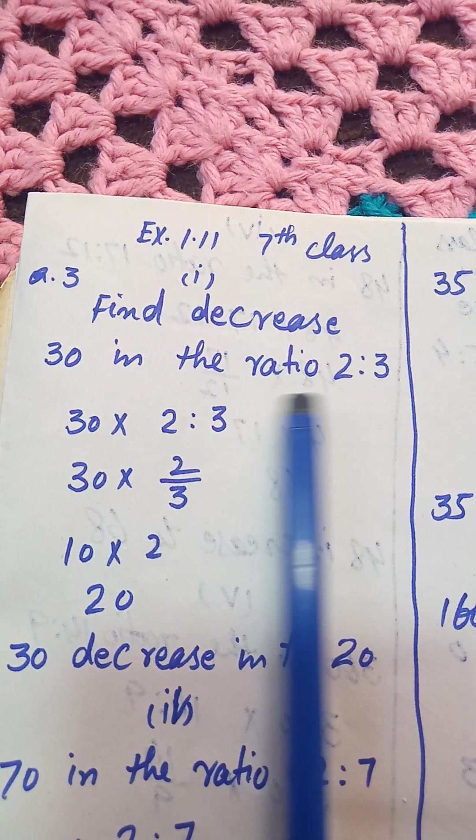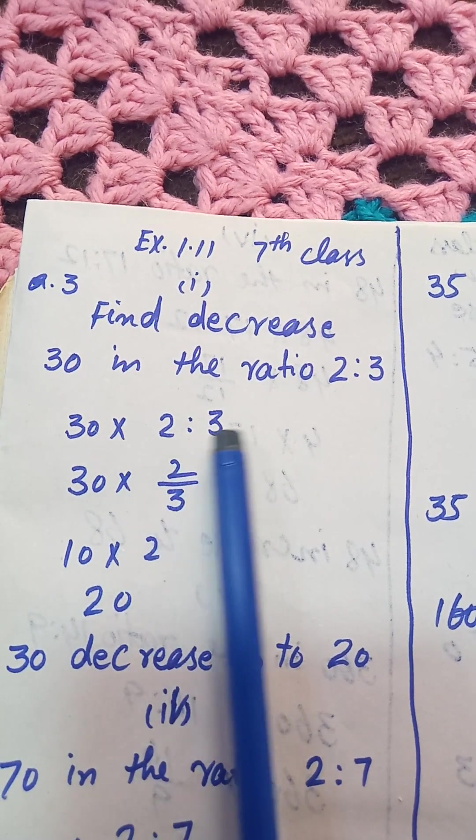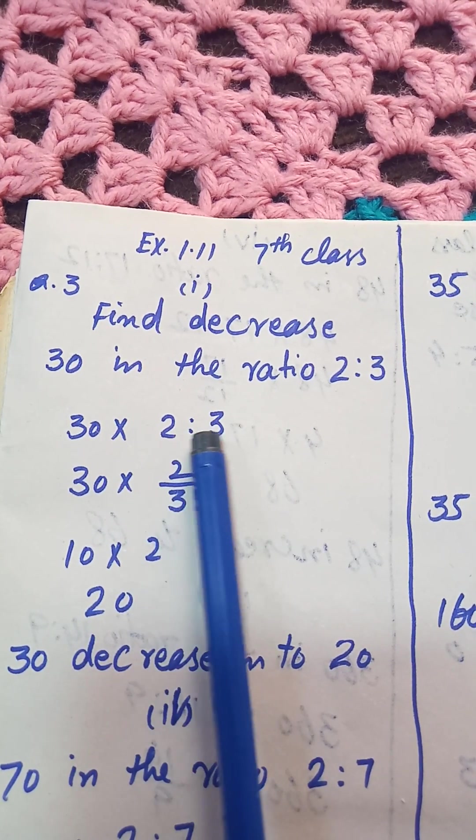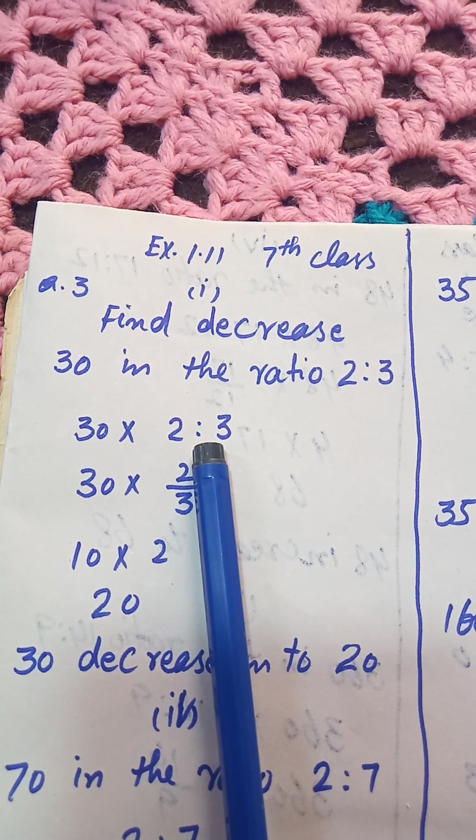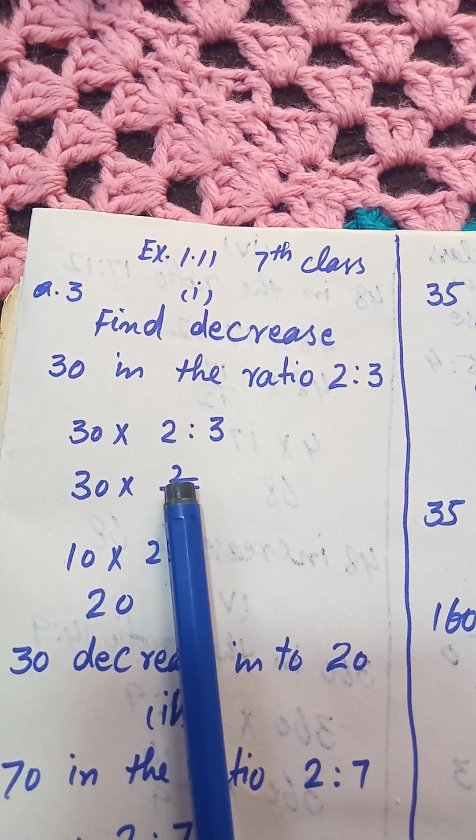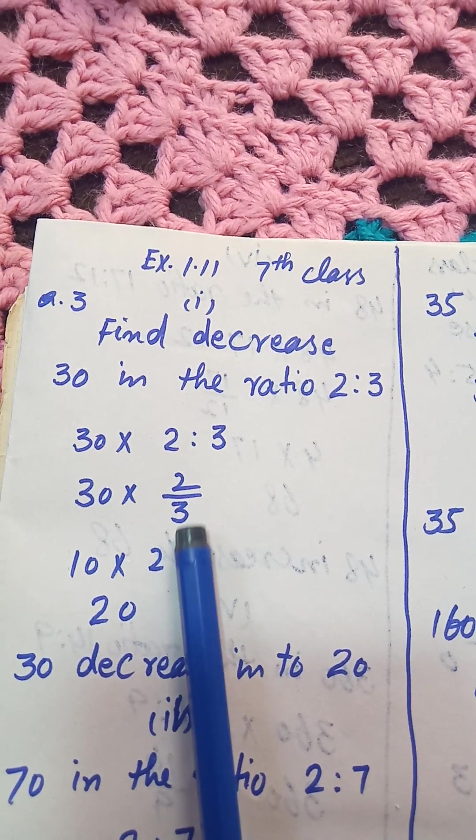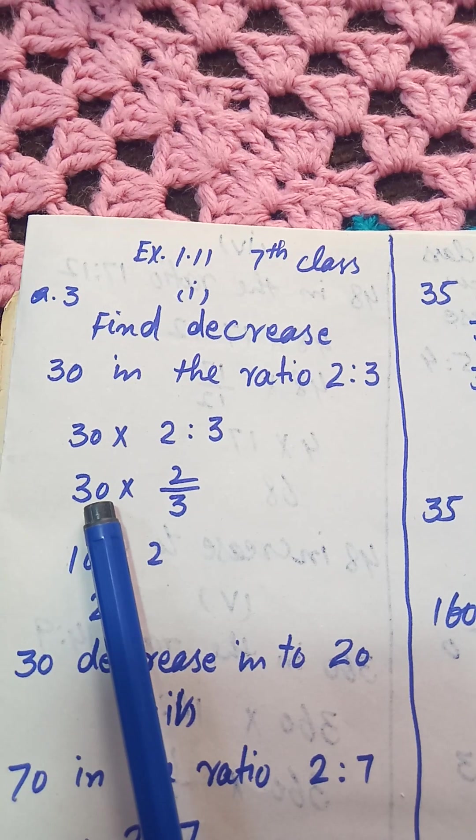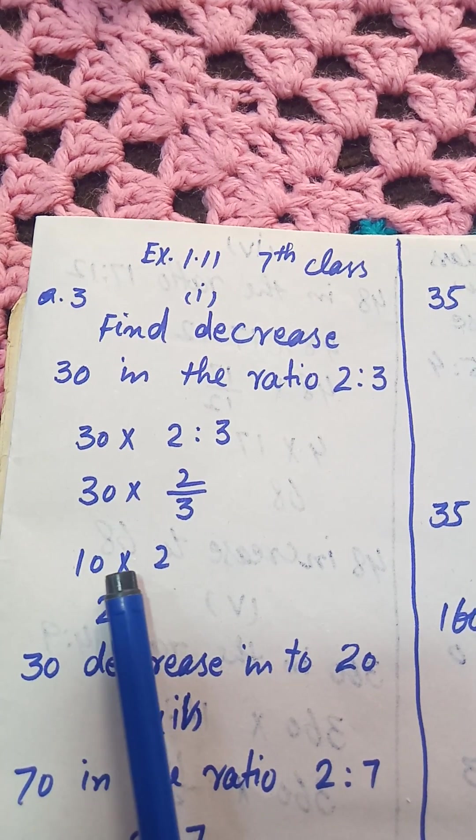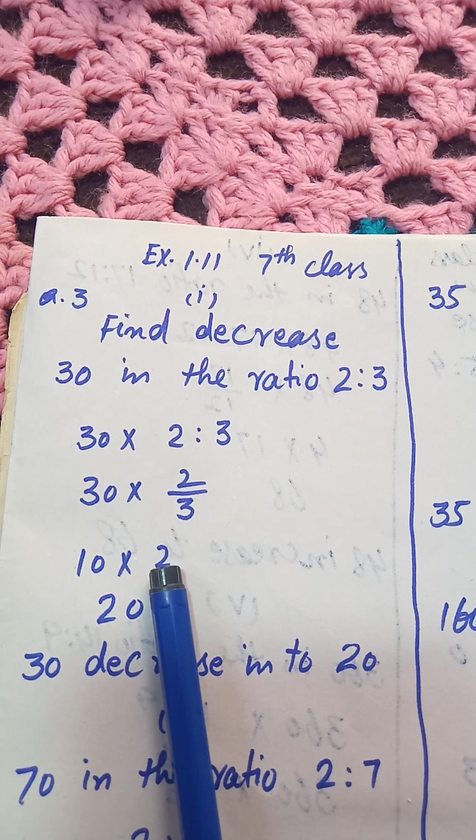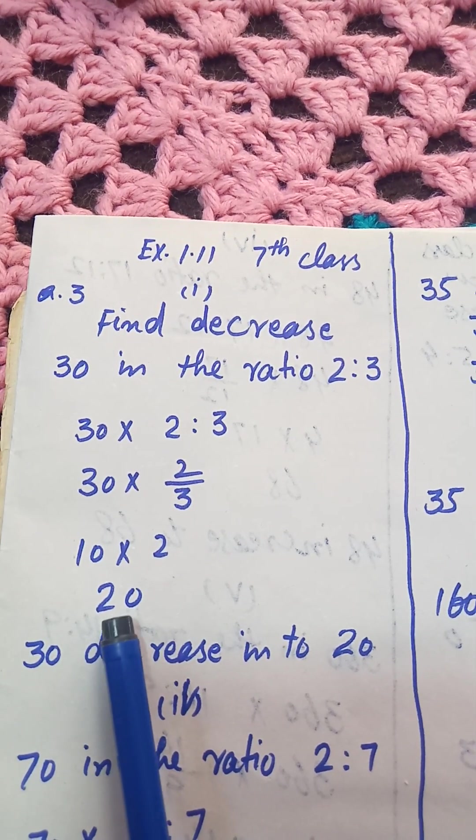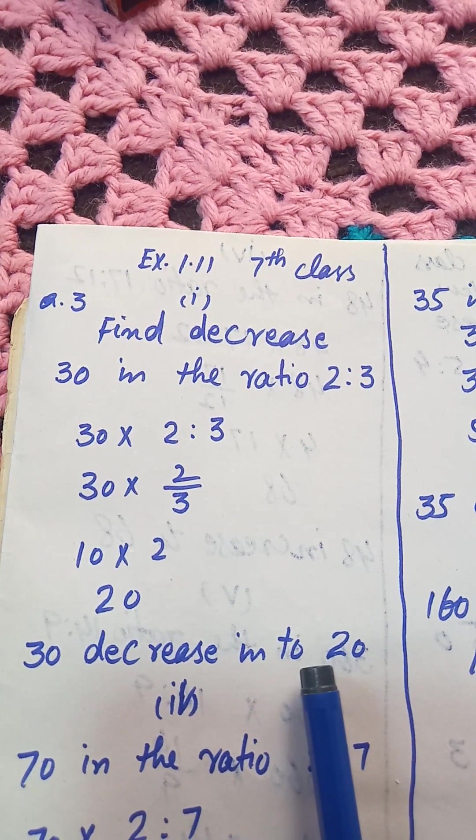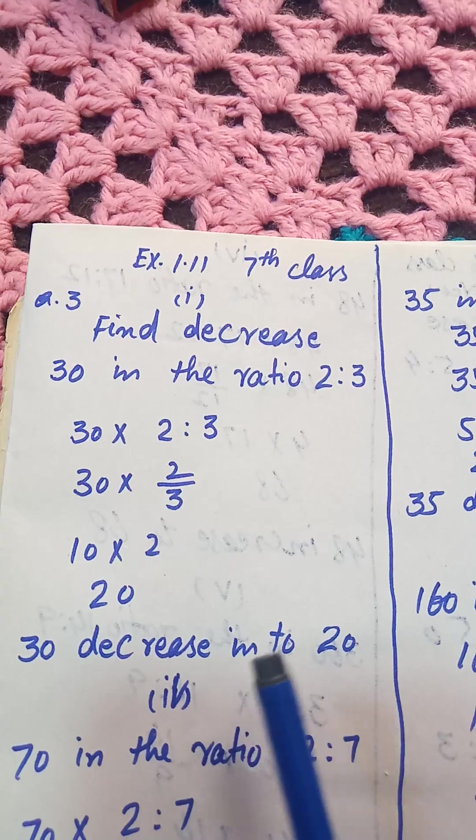30 in the ratio 2:3 is in ratio form. Convert it into fraction form: 2 by 3, or 2 divided by 3. So 30 divided by 3, the answer is 10. Then 10 times 2, answer is 20. So 30 decreased to 20 - this is our required answer which we find easily.